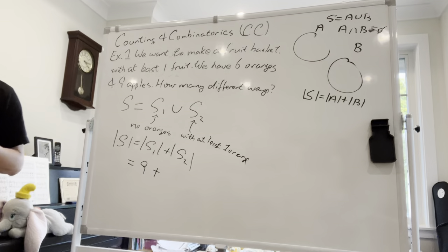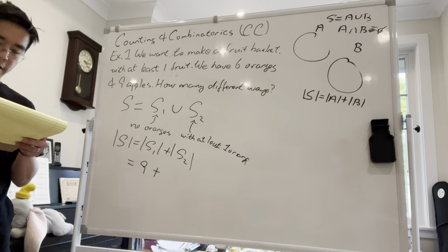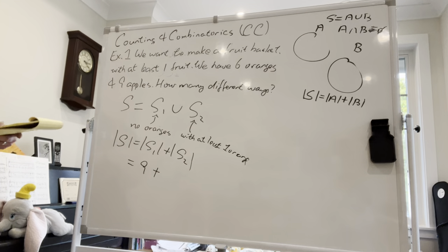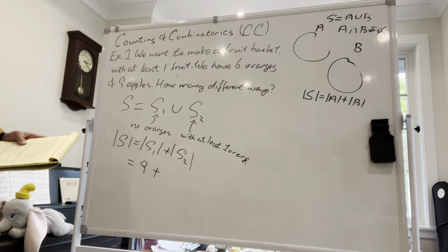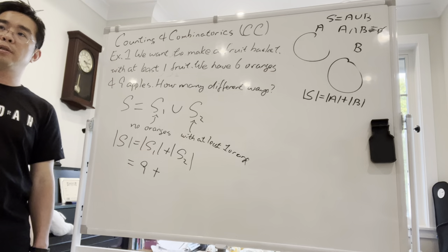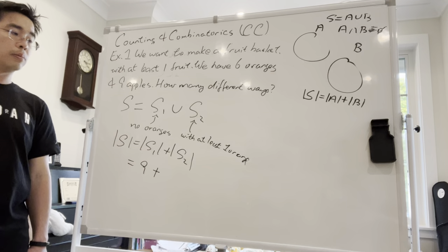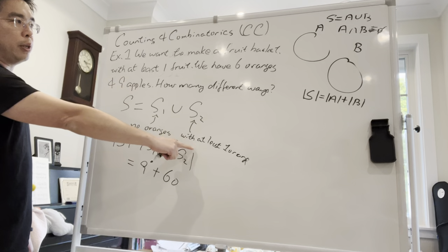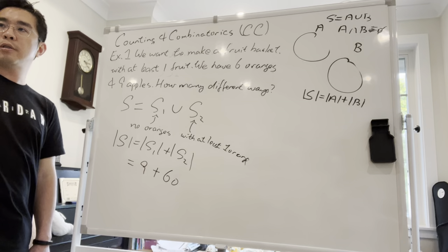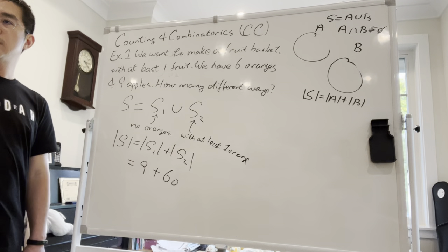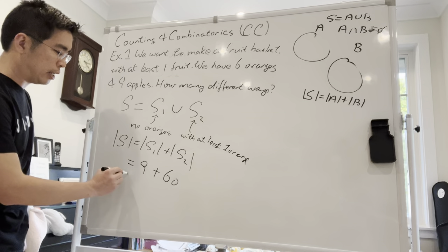What about the second group — baskets with at least one orange? Because it has at least one orange, it could be one, two, three, four, five, or six oranges. For each of those, you can have no apple, one apple, two apples, up to nine apples — that's ten options per orange count. So six times ten equals sixty. Therefore the total answer is 60 plus 9, which is 69. Can I get a show of hands? So this is the first principle: addition principle.